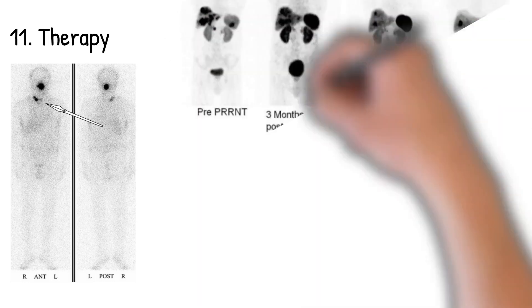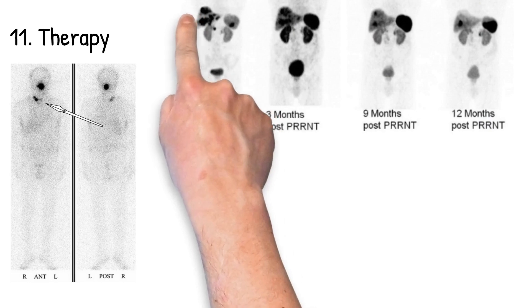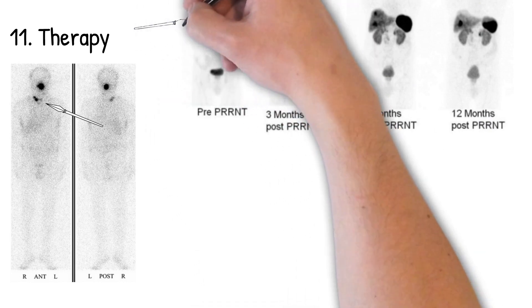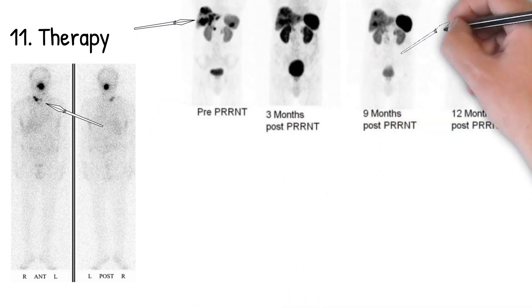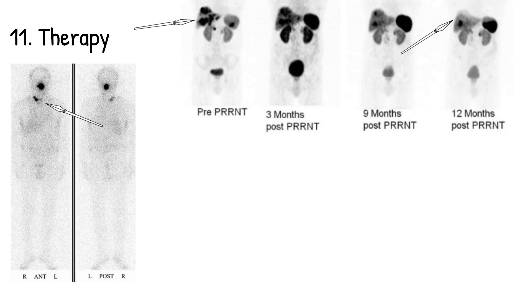There's an array of therapy studies that we can do with Hodgkin's disease and non-Hodgkin's lymphoma, for example. Here we can actually see somatostatin receptor therapy with lutetium-177. And you can see the improvement over a period of 12 months with those arrows with disease in the liver.